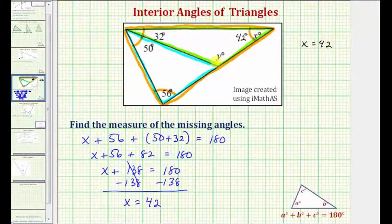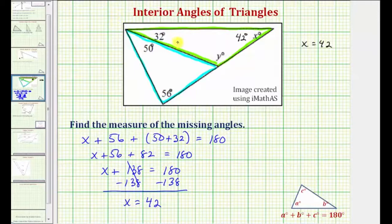Now let's focus on this upper smaller triangle. Notice how we have two of the three interior angles, and therefore we can now determine the measure of angle y. So again, focusing on this smaller upper triangle, or this green triangle,